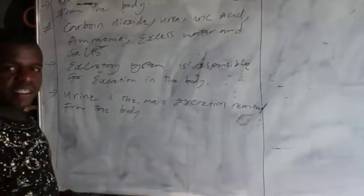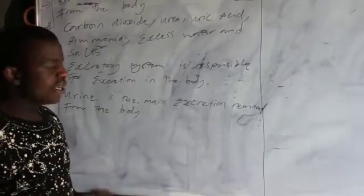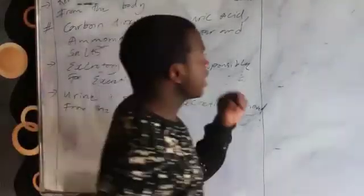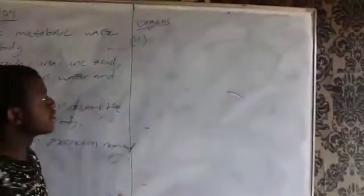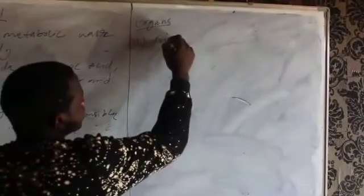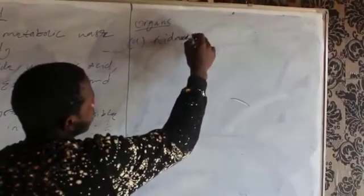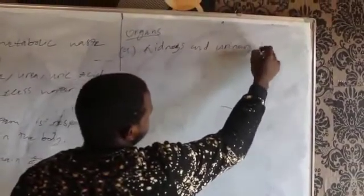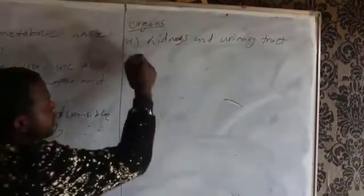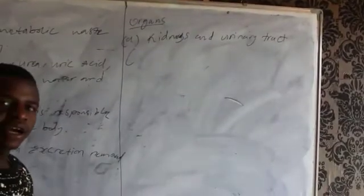Now let us look at the organs of the excretory system. The first organ we have is the kidneys, and the urinary tract. In the urinary tract they include the ureters, the urethra, and the bladder.